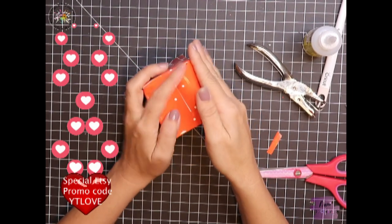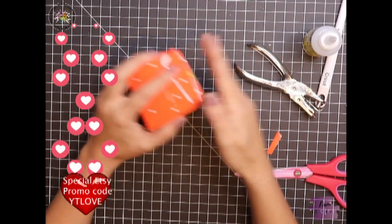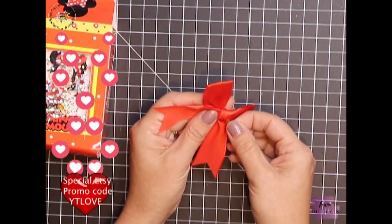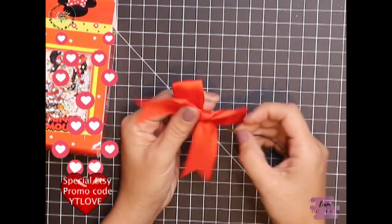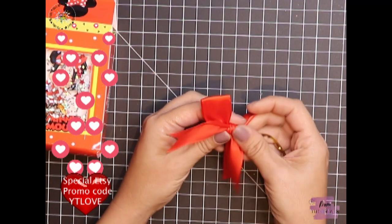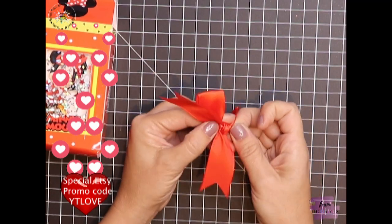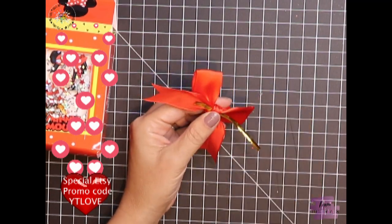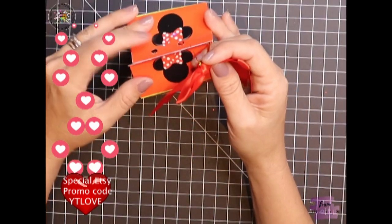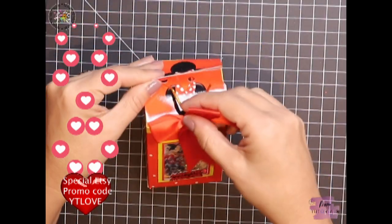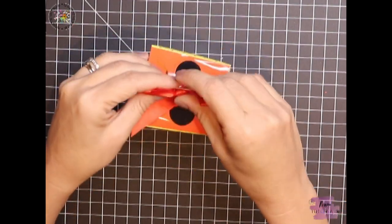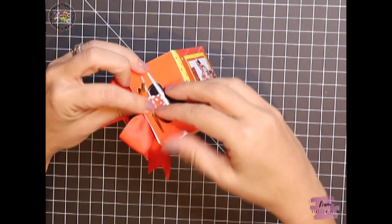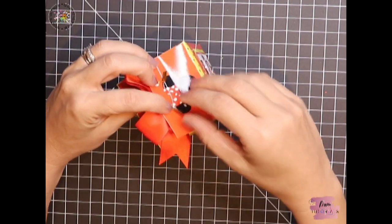Here we go, this is our really special Etsy coupon code - go there and use that for a really cool discount for this template. I'm using a little tag in the middle of my ribbon and we're going to close the box. You can put chocolate, gifts, crayons, markers, stickers, a little cookie, Oreos, so much more.